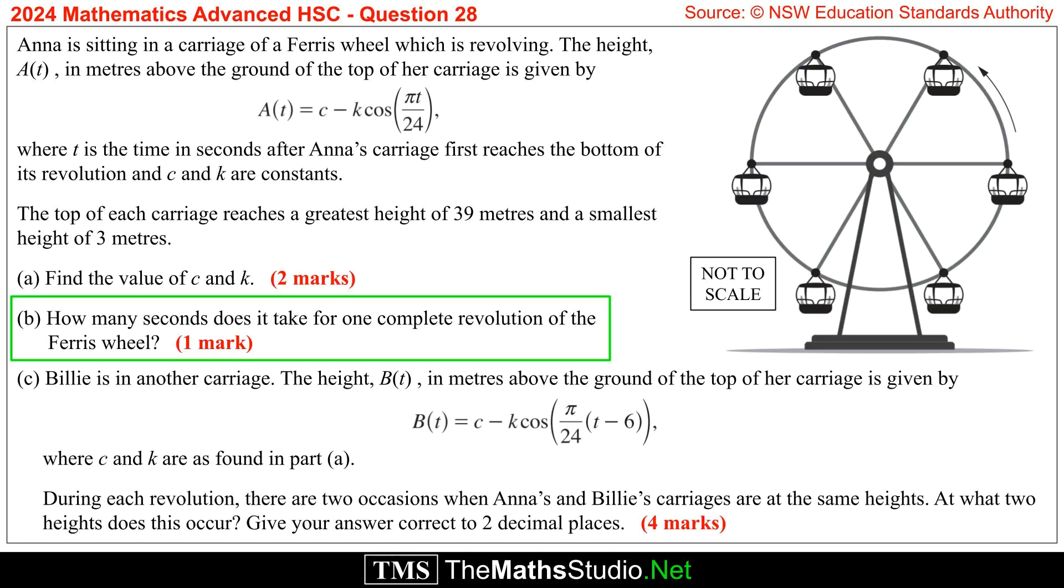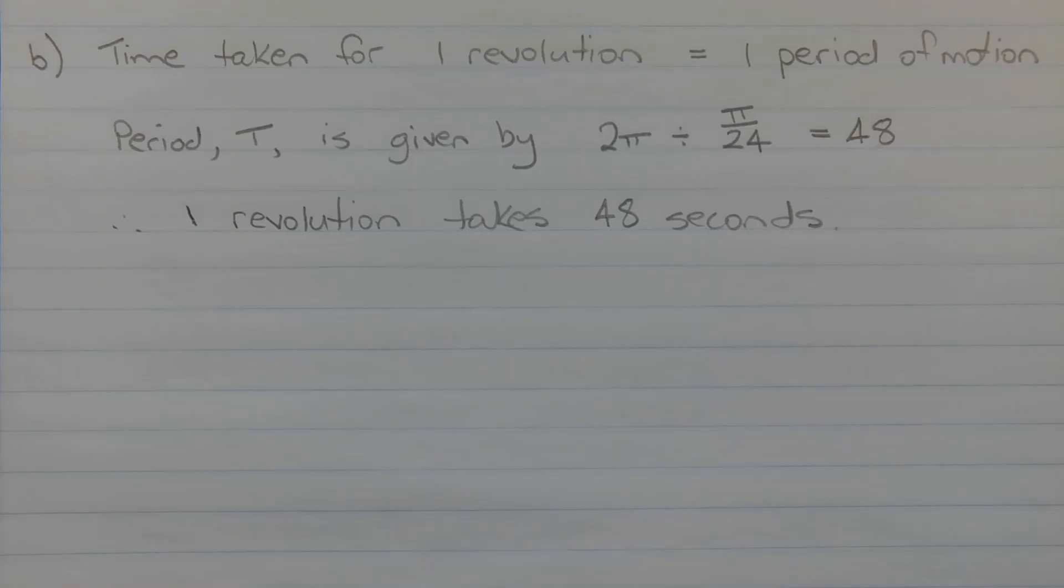Part B: How many seconds does it take for one complete revolution of the ferris wheel? The time taken for one revolution or one complete spin of the ferris wheel is equivalent to one period of motion.